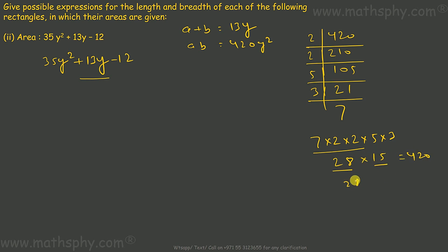So I can write this as 35y squared plus 28y minus 15y minus 12.